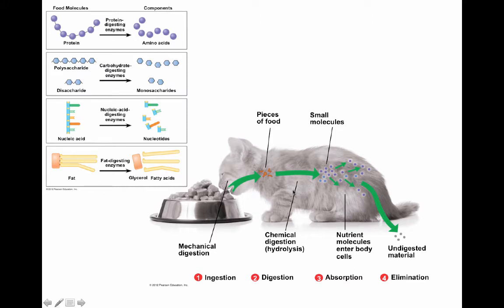Then we have chemical digestion, occurring in the stomach and intestines, where enzymes break down food — taking a large molecule like a protein and breaking its bonds to make smaller individual molecules. These smaller molecules, like amino acids or monosaccharides, can then be built into new molecules for the body or used in cellular respiration to generate ATP. The absorption phase is how you actually get these small molecules into the cells by transporting them across cell membranes.